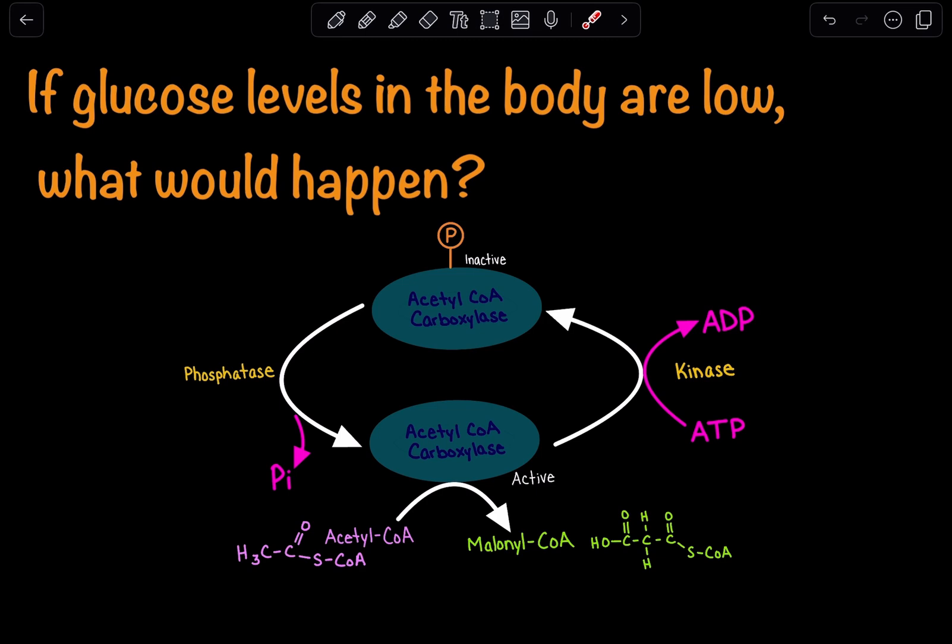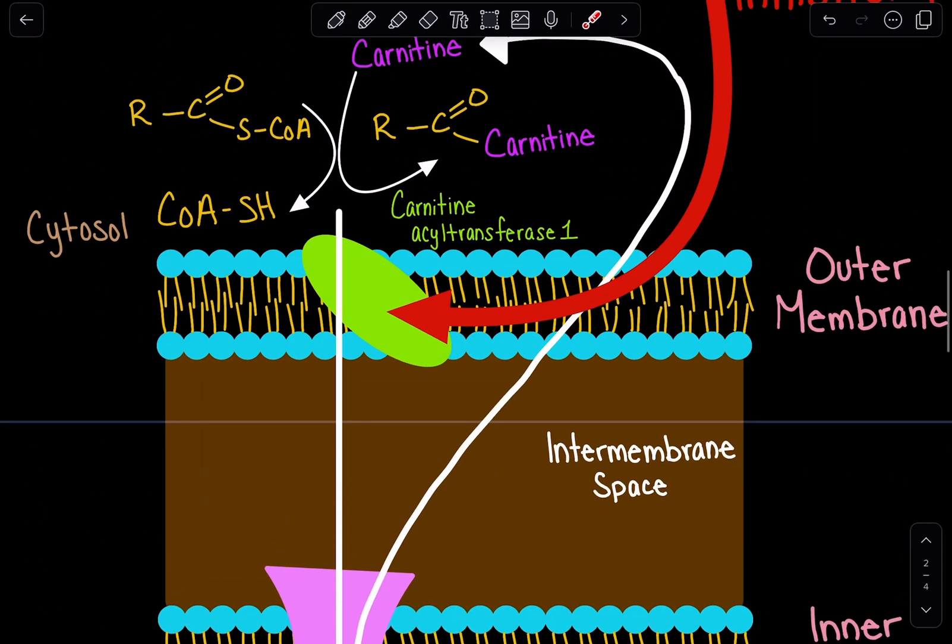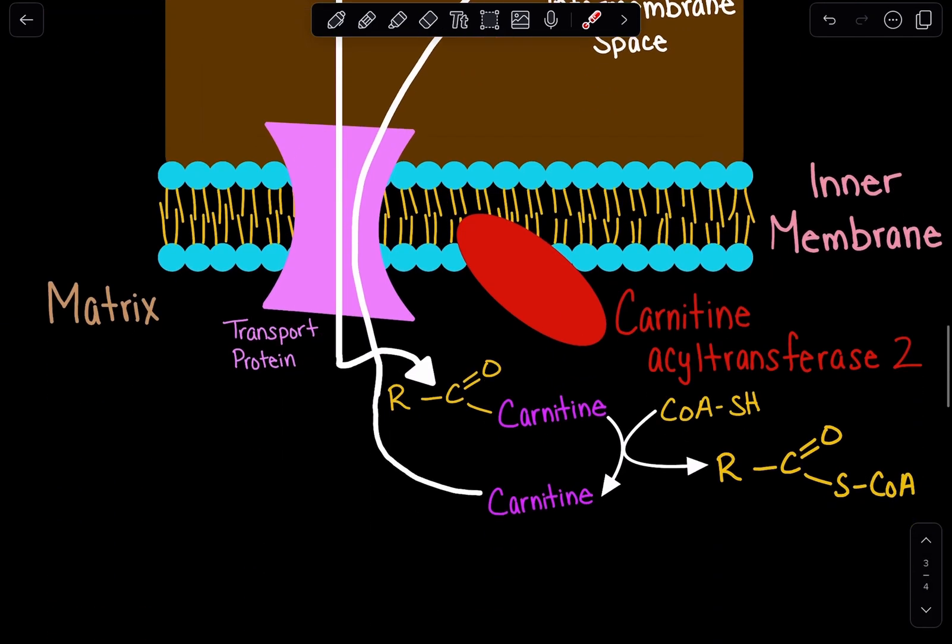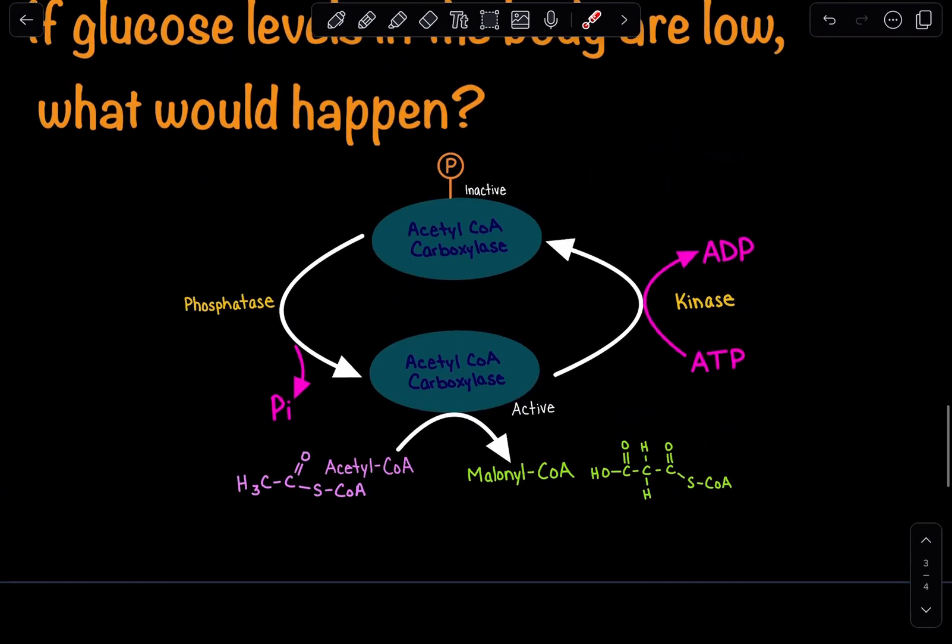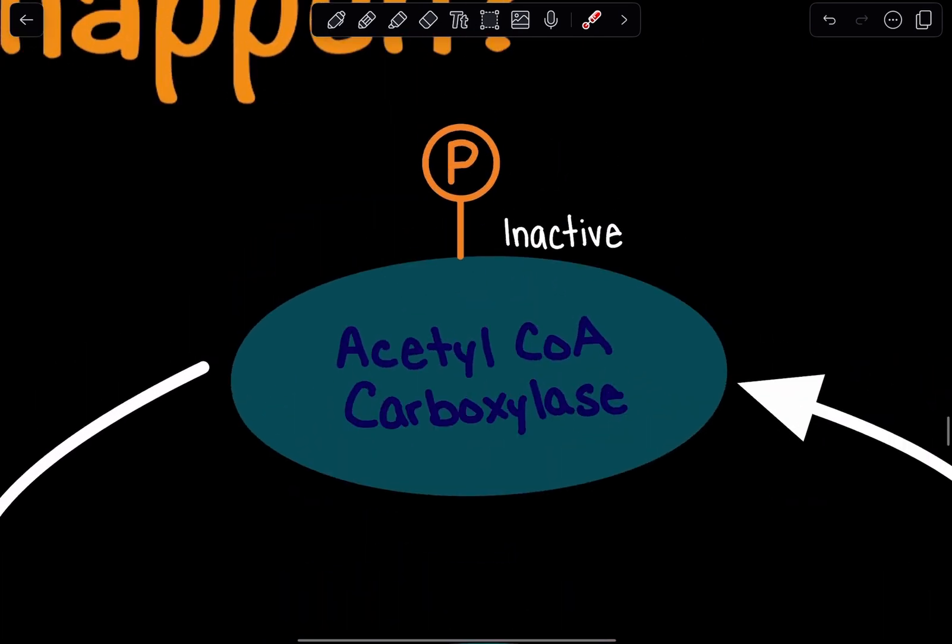We rely on fats, so lipids must be broken down. Does acetyl-CoA carboxylase need to be active or inactive? If we're producing malonyl-CoA, it inhibits carnitine acyl transferase and the breakdown of fatty acids. To break down fatty acids, acetyl-CoA carboxylase must be inactive and phosphorylated so it doesn't produce malonyl-CoA.